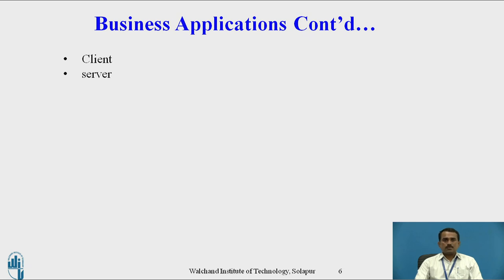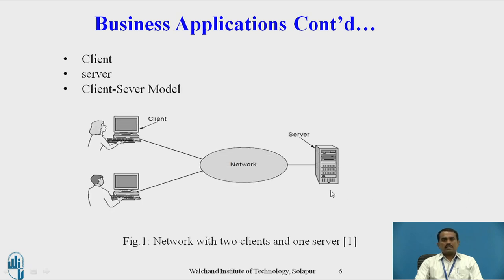In the Client-Server Model, the client is the device that sends requests from the local machine, and the server is the device that receives the request from the client — it can be a resource machine or remote center machine. In this model, Client 1 and Client 2 send requests to the server through the network. The server checks the client requests, processes them, and sends replies to both clients through the network. This is a network with two clients and one server.